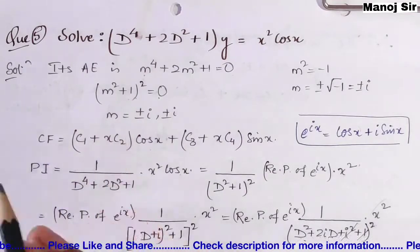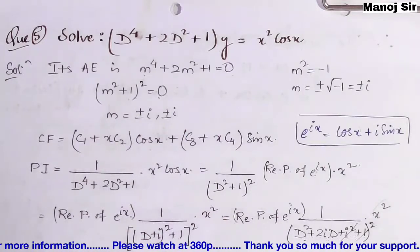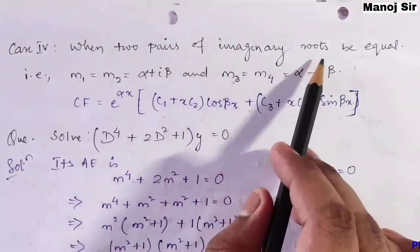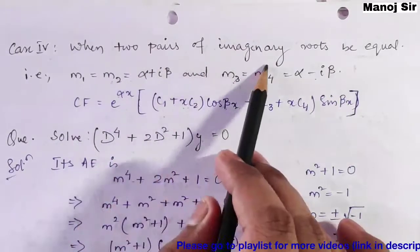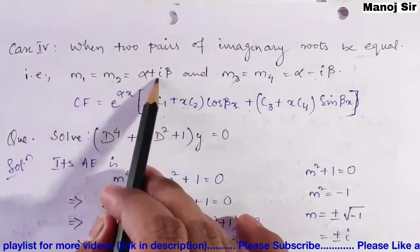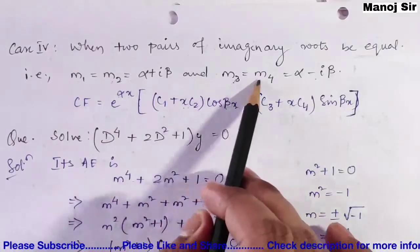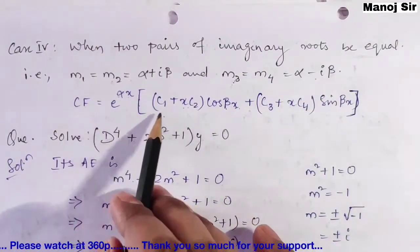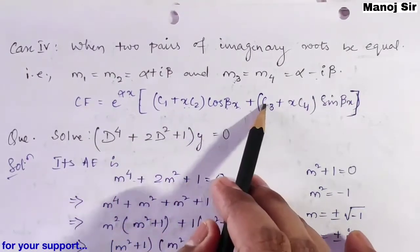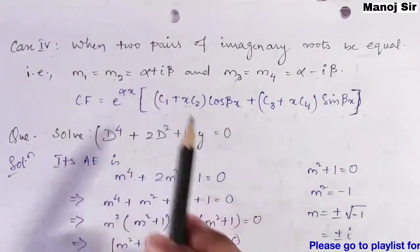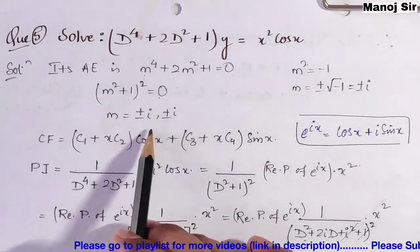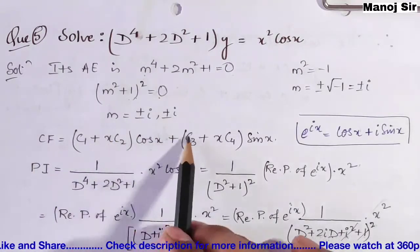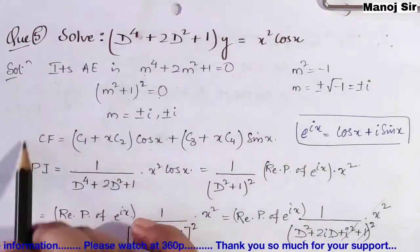Now let's find the CF for these values of m. When two pairs of imaginary roots are equal — say m₁, m₂ = α ± iβ and m₃, m₄ = α ± iβ — the CF is e^(αx)[(c₁ + xc₂)cos(βx) + (c₃ + xc₄)sin(βx)]. Here α = 0 and β = 1, so CF = (c₁ + xc₂)cos x + (c₃ + xc₄)sin x.